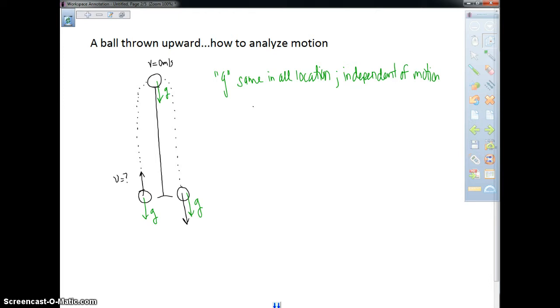Notice that the velocity changes. The velocity goes from being positive to zero, and technically it's negative. Something else that's true is that the velocity you throw it at, as long as you catch in the same spot, will be the same.